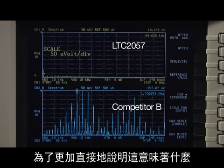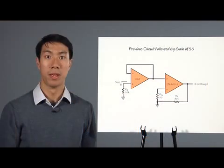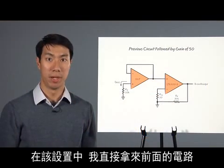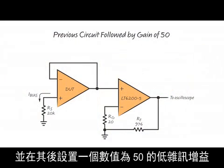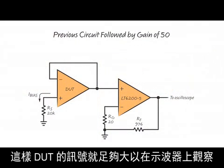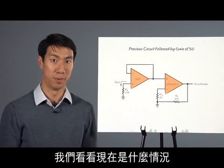For a more direct illustration of what this means, let's examine this circuit in the time domain. In this setup, I have simply taken the previous circuit and followed it with a low noise gain of 50, so that the DUT's signal is big enough to see on a scope. Let's see what we get now.